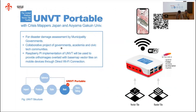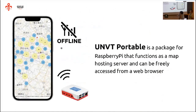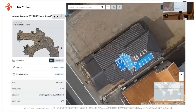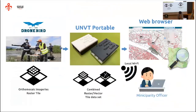So we now produce the UNVT portable tool. This is the UNVT Portable — a package for the Raspberry Pi that functions as a map hosting server. It can be freely accessed from a web browser. So what is the purpose? We are from Japan, and Japan has a lot of disasters. This year also a big disaster happened. We are a team called Drone Birds — when a disaster happens, we fly drones and take photos of the situation.